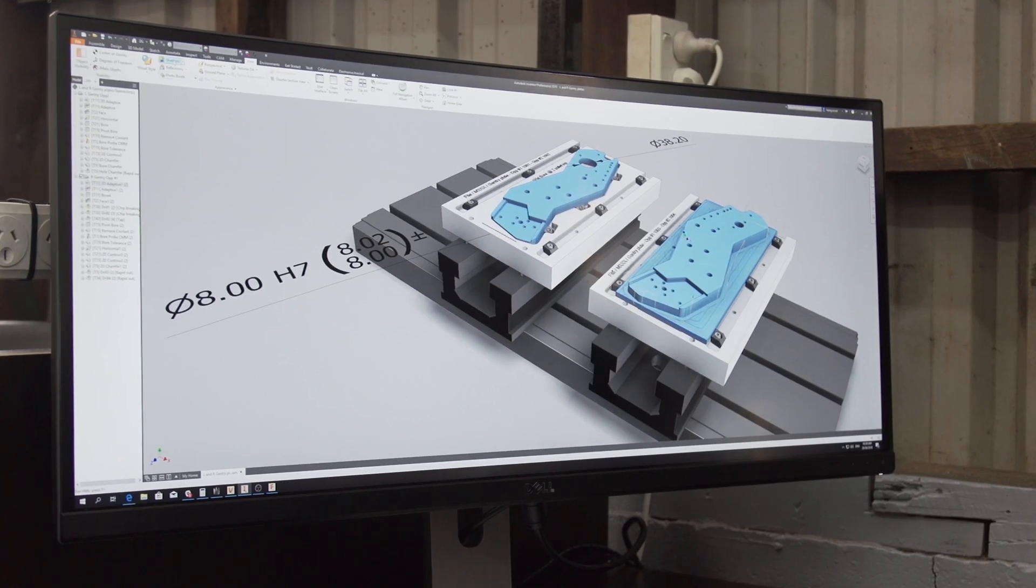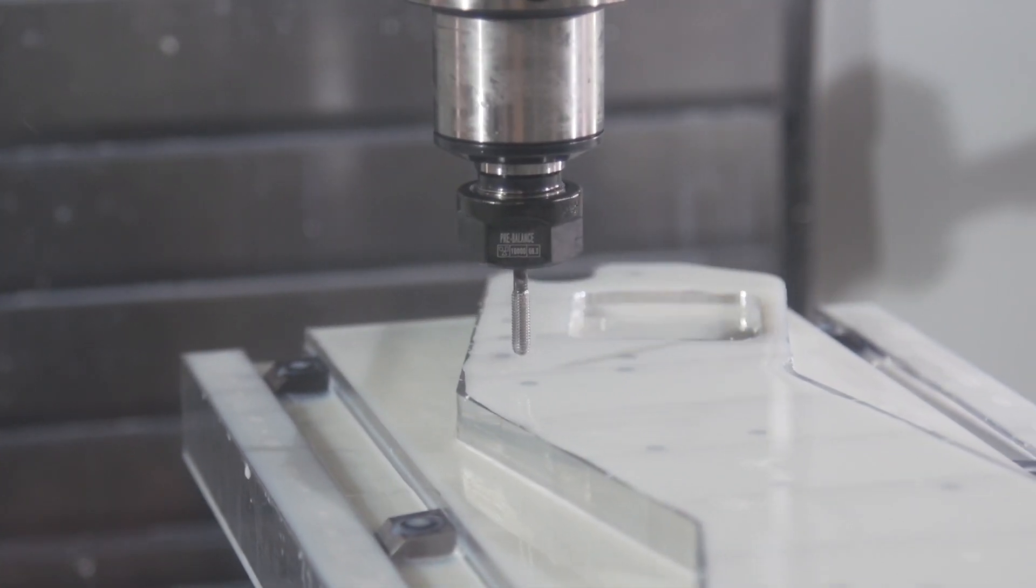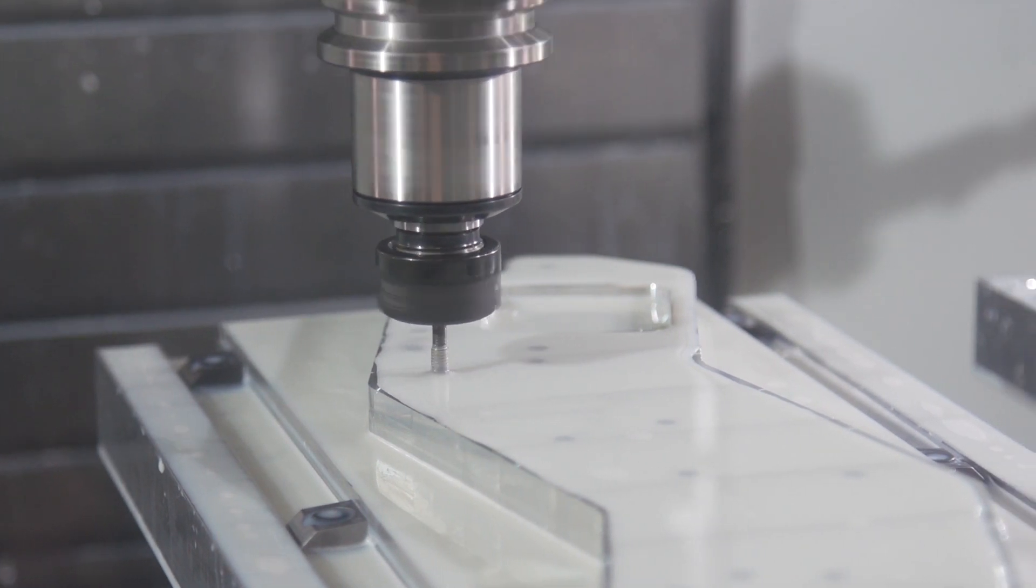That's where the seamless integration between the post processor and our Haas controller works great. Being able to push files straight to the machine and have the data sets come up on the screen on the Haas.